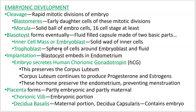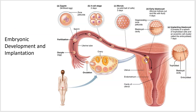The trophoblast makes contact with the endometrium — it doesn't become the placenta, which is a later structure, but it forms that first interface with the endometrium. The process of the blastocyst embedding is called implantation, where it buries itself in the inner uterine wall — that's the endometrium, the vascular layer that this little critter buries into.